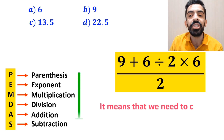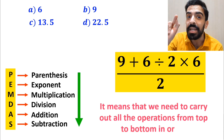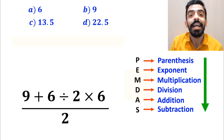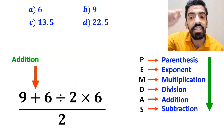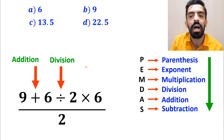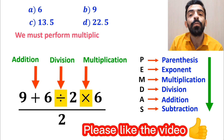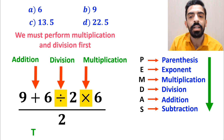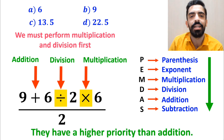PEMDAS means we need to carry out all operations from top to bottom in order. As you can see on the screen, in the numerator of this fraction, first we have an addition sign, then a division sign, and finally a multiplication. According to the PEMDAS rule, we must perform multiplication and division first, because they have a higher priority than addition.